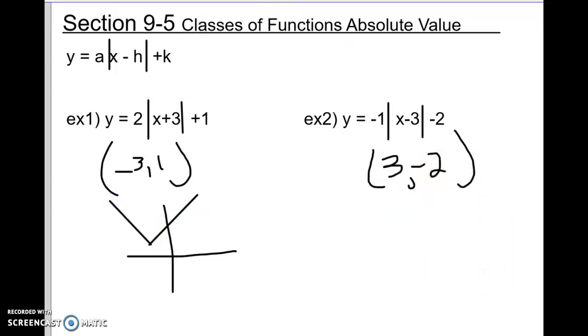Same thing on this one. We go to 3, negative 2. But it opens down, so when you plot your vertex, you open it down. And that's absolute value. See you next time.